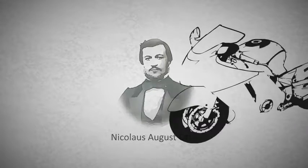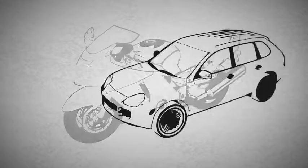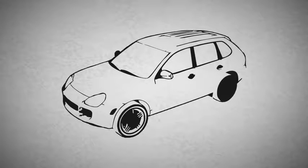Otto engines were used in motorcycles, cars, and other vehicles. This animation explains the Otto engine as a 4-stroke engine.